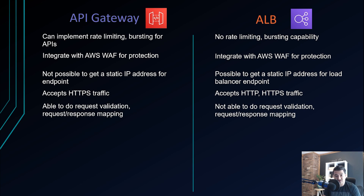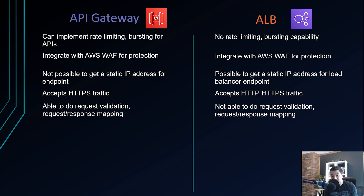A big feature of API Gateway is request validation and request-response mapping. Using an Apache Velocity template, you can check if particular fields are present in the input API request. For example, if you expect a field called 'account_number' and it's missing, you can reject it straight away from API Gateway without going to the backend. Similarly, for response mapping, you can move a value from a field like 'account_number' to 'acct_no' before calling the backend. ALB cannot do any of this.